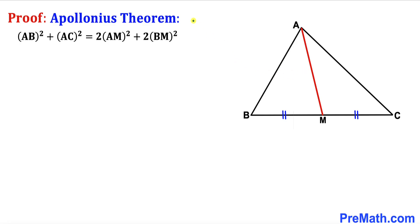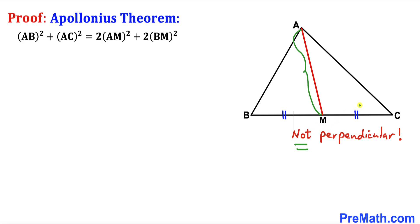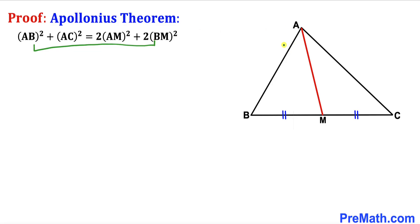Welcome to pre-math. In this video we are going to prove the Apollonius theorem for triangle ABC, where line segment AM is the median for side BC. AM bisects BC into two equal parts BM and MC. Keep in mind that this median AM is not perpendicular to BC. We are going to prove the formula: AB² + AC² = 2·AM² + 2·BM².